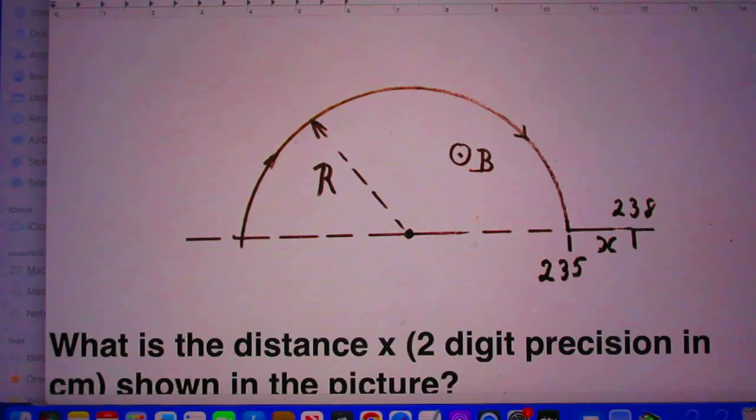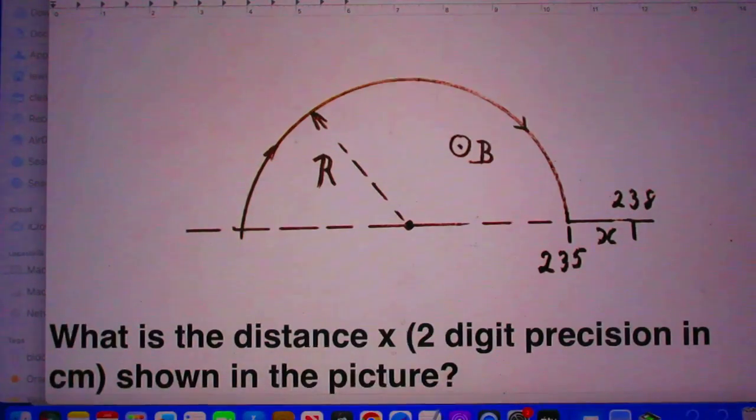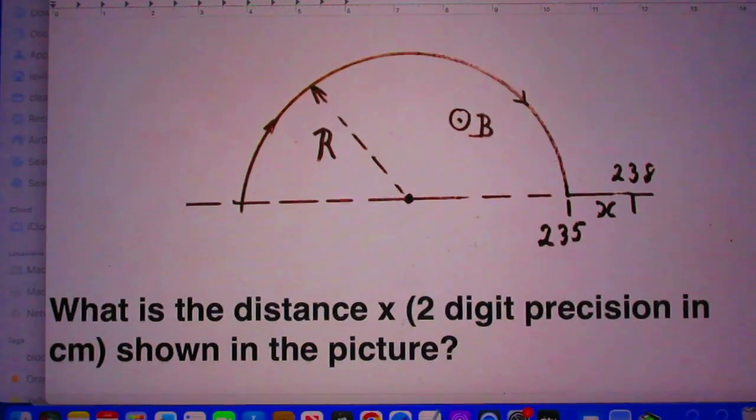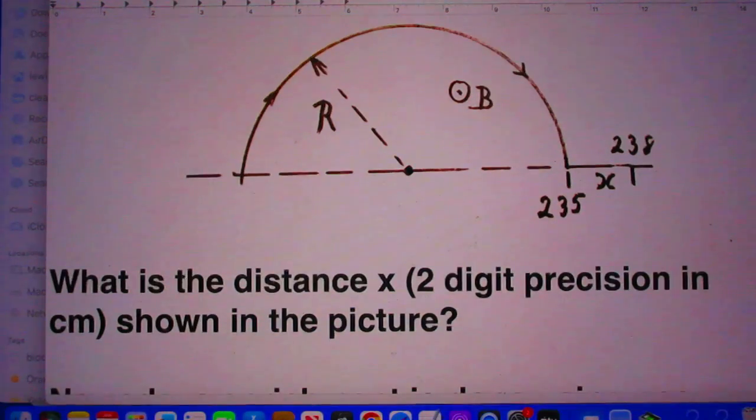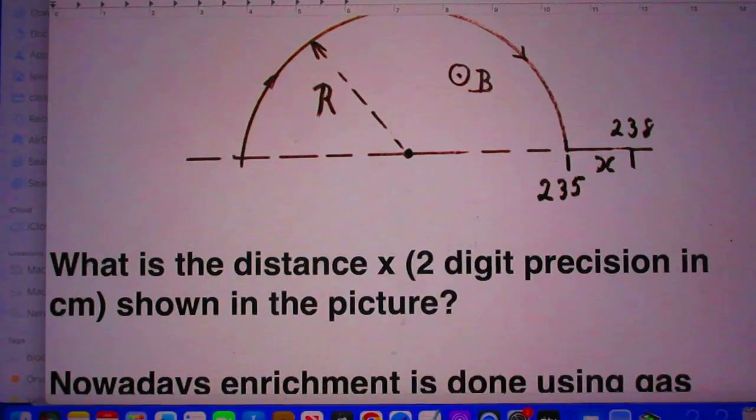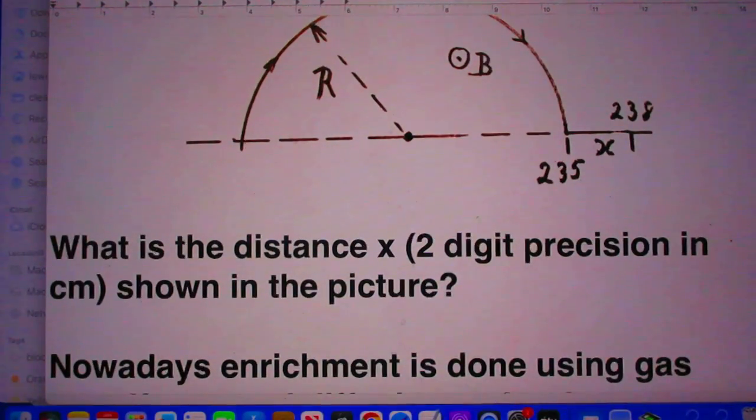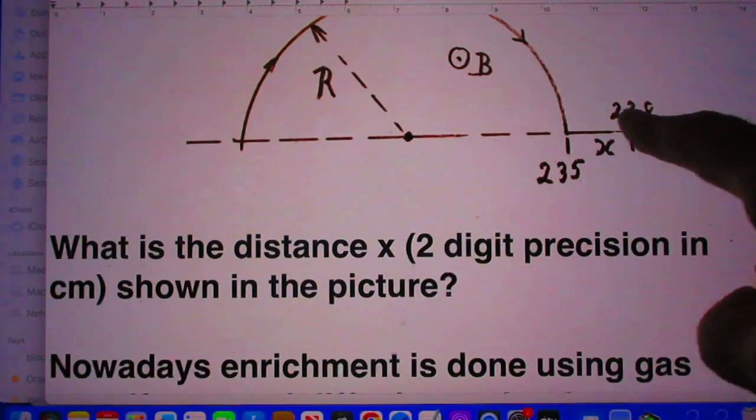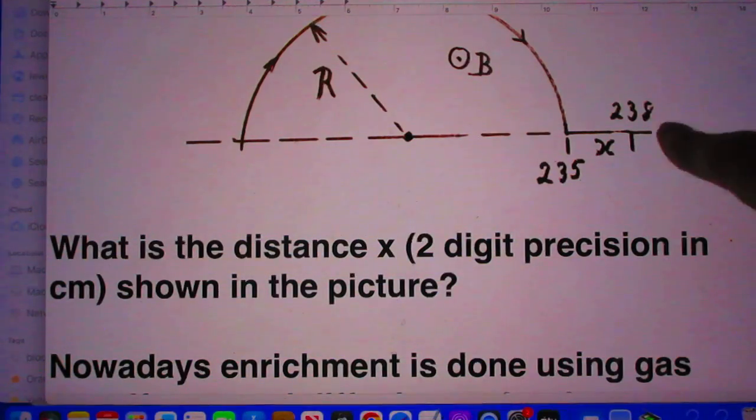The question is what is the distance x? I want two digit precision in centimeters. So what is this distance? And so you could catch here the 238, but you're not interested in that, but you can catch here the 235, and that's what you want.